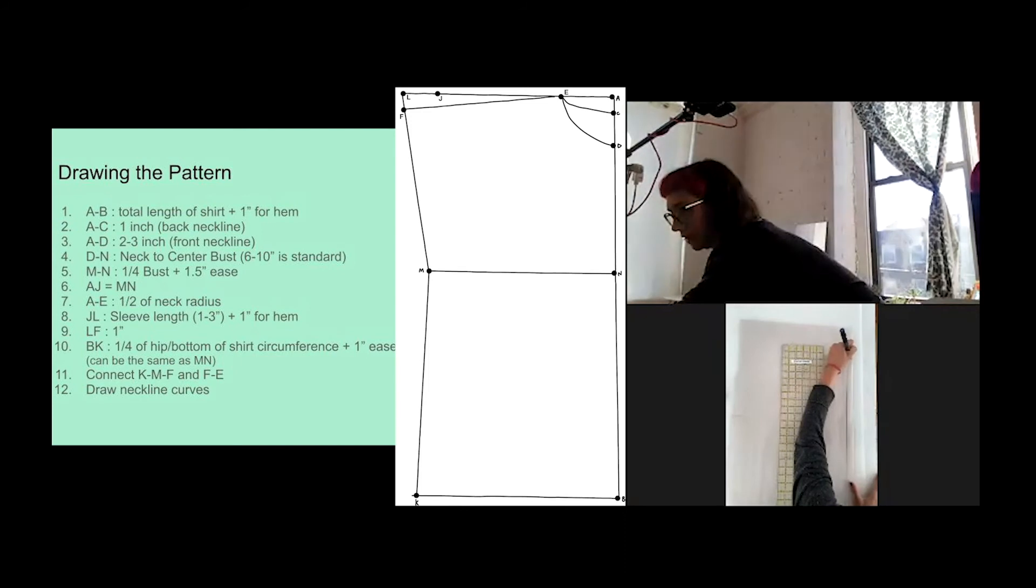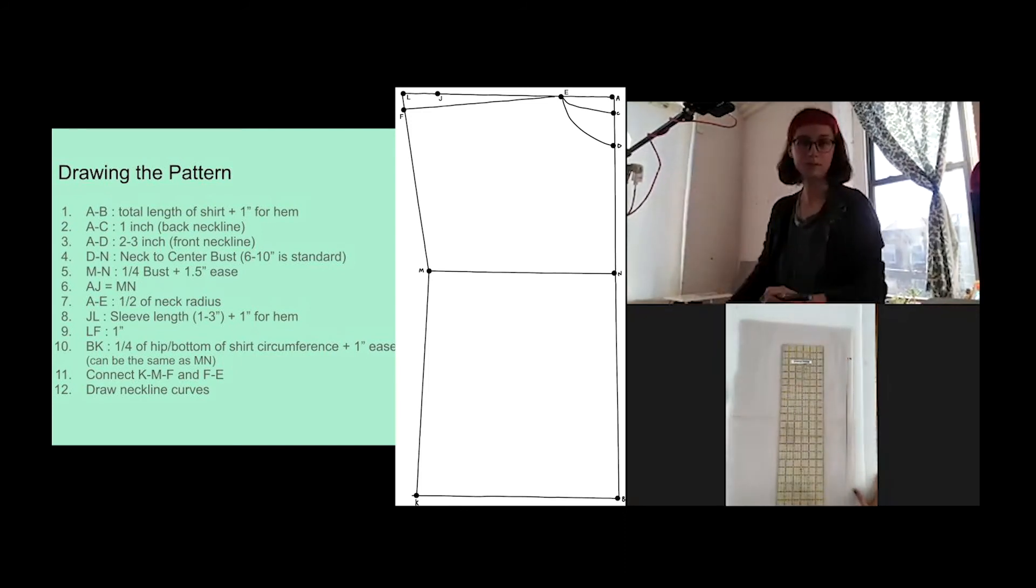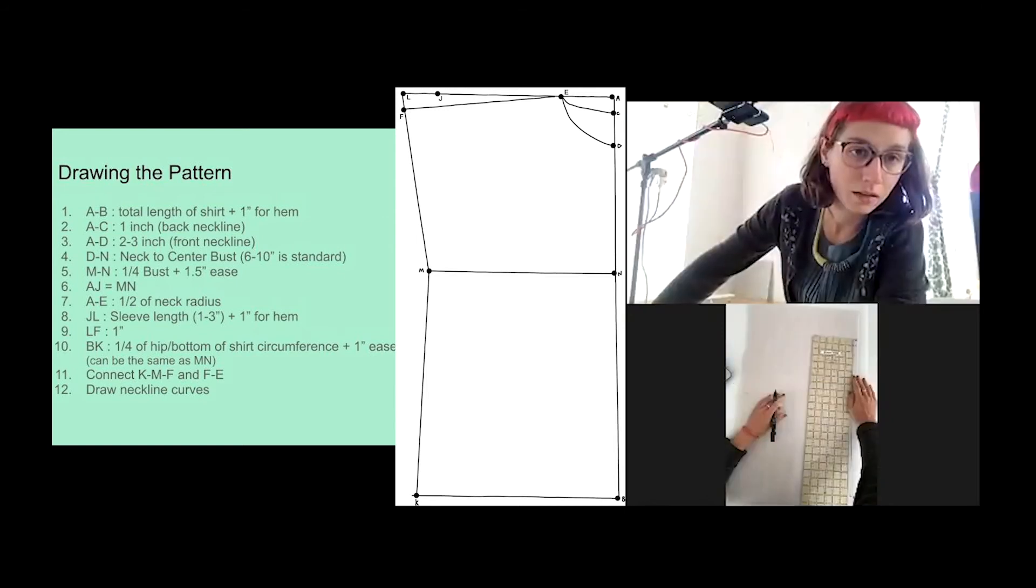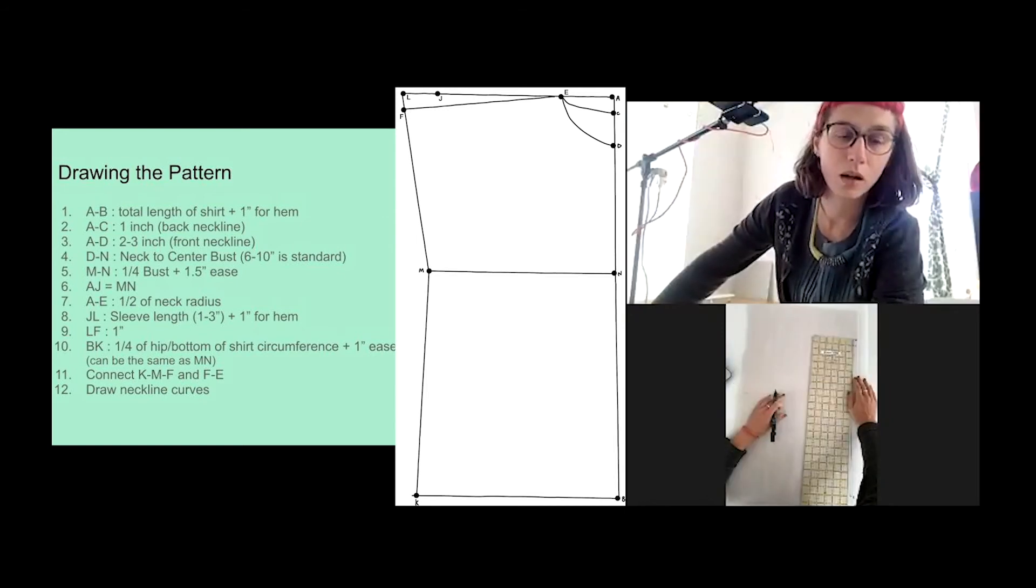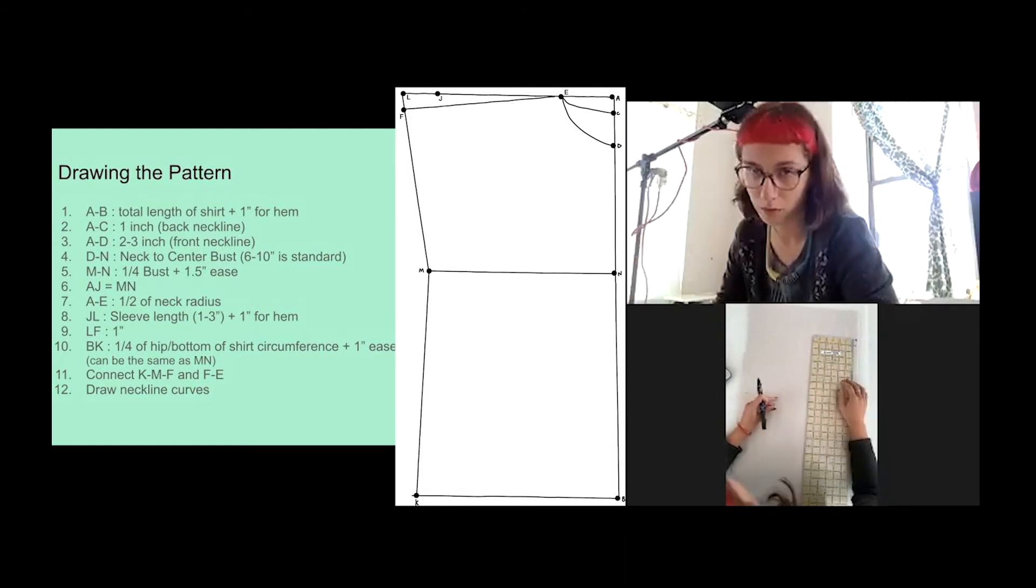And then I'm going to mark C, which is one inch down from A, and then D basically two to three inches down from A. So another one or two inches from C. D to N is going to be your neck to center bust measurement.